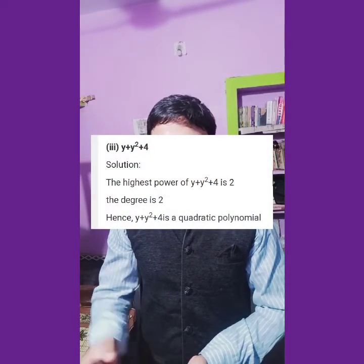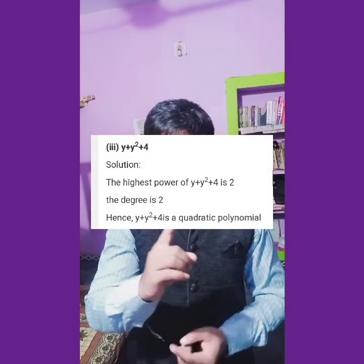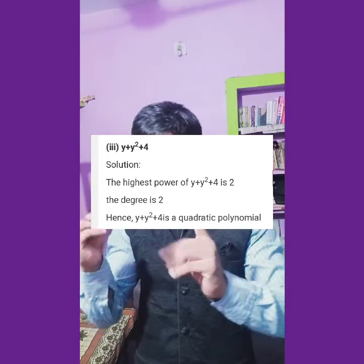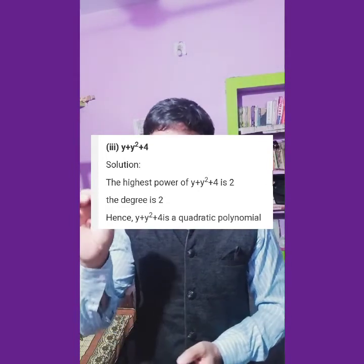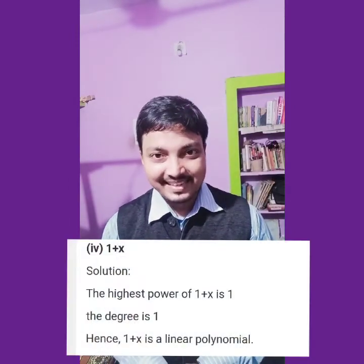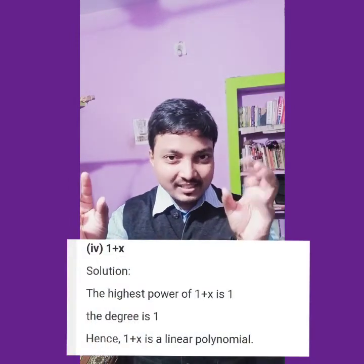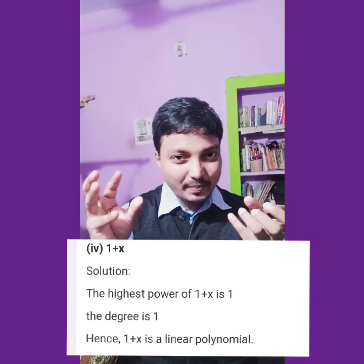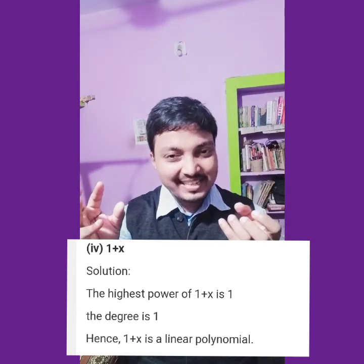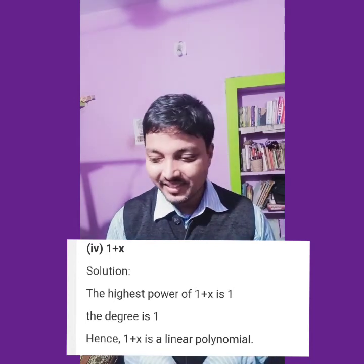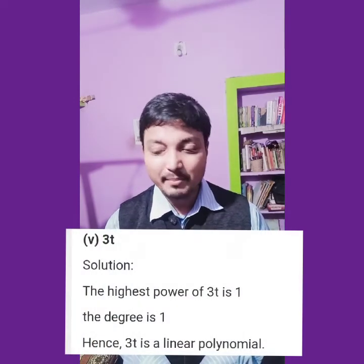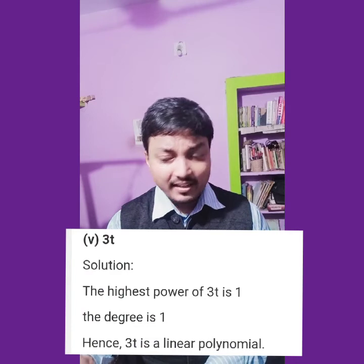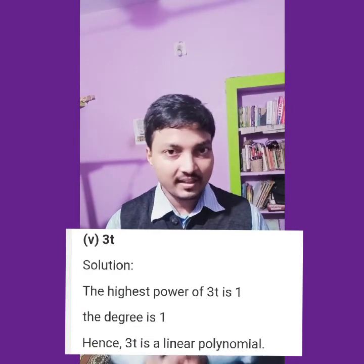Next one is y plus y square plus 4. Three terms with powers 1, 2, and 0. The highest power is 2, so it is quadratic. Next one is 1 plus x: constant has power 0, and x has power 1. Highest power is 1, so it is linear.